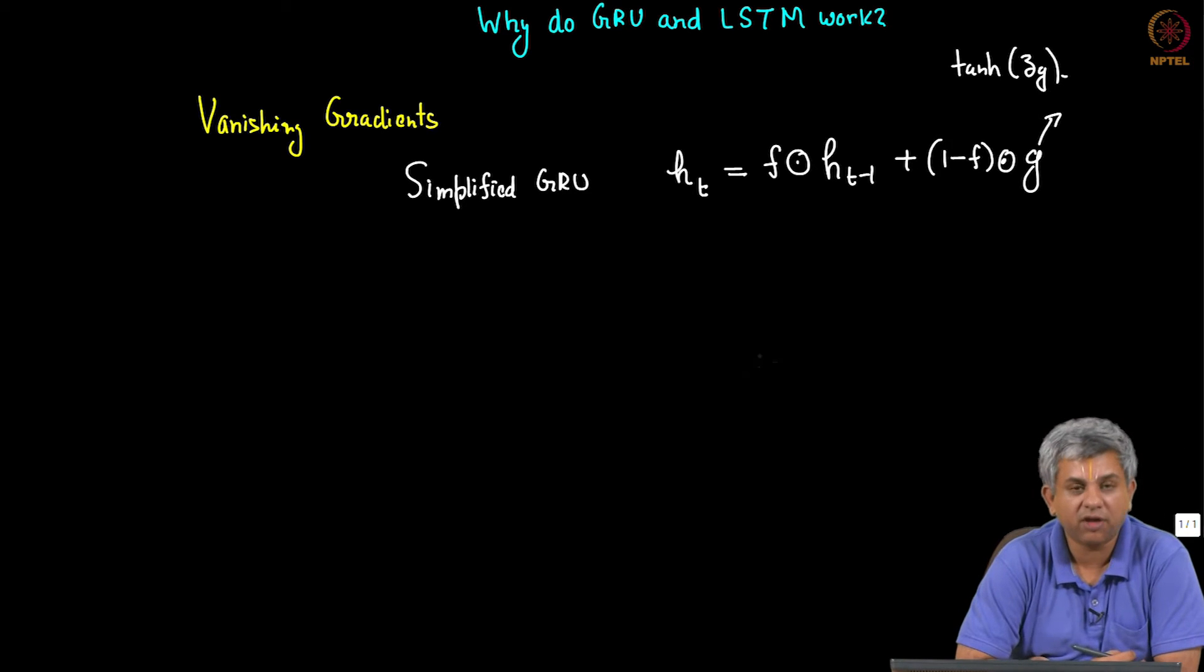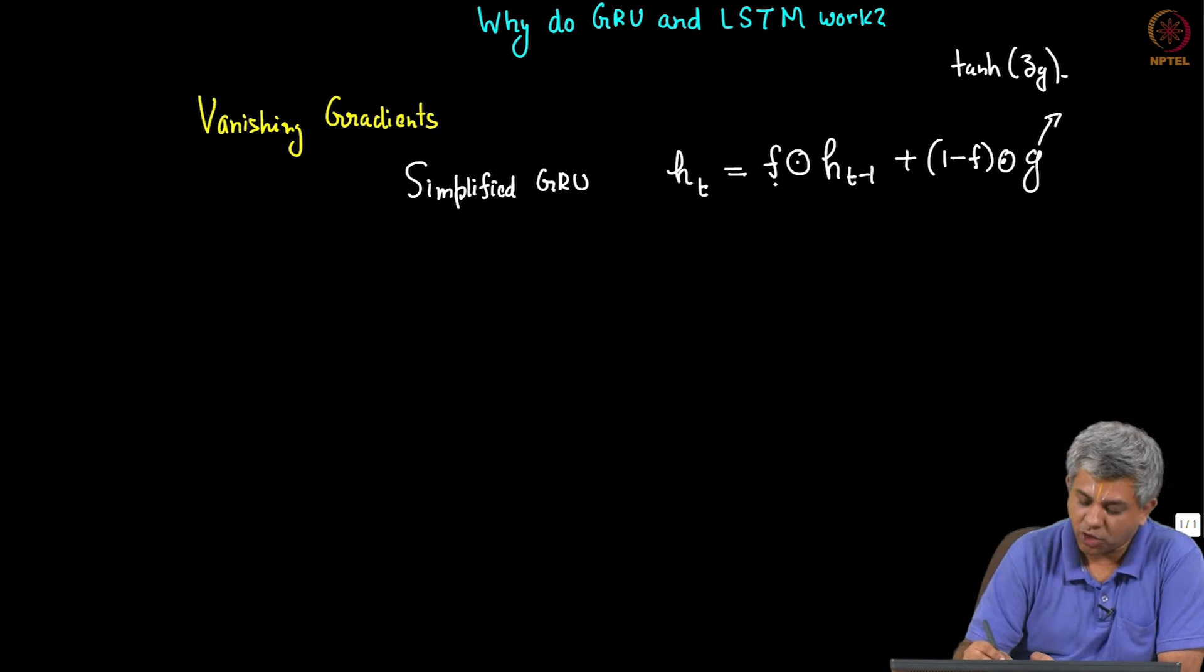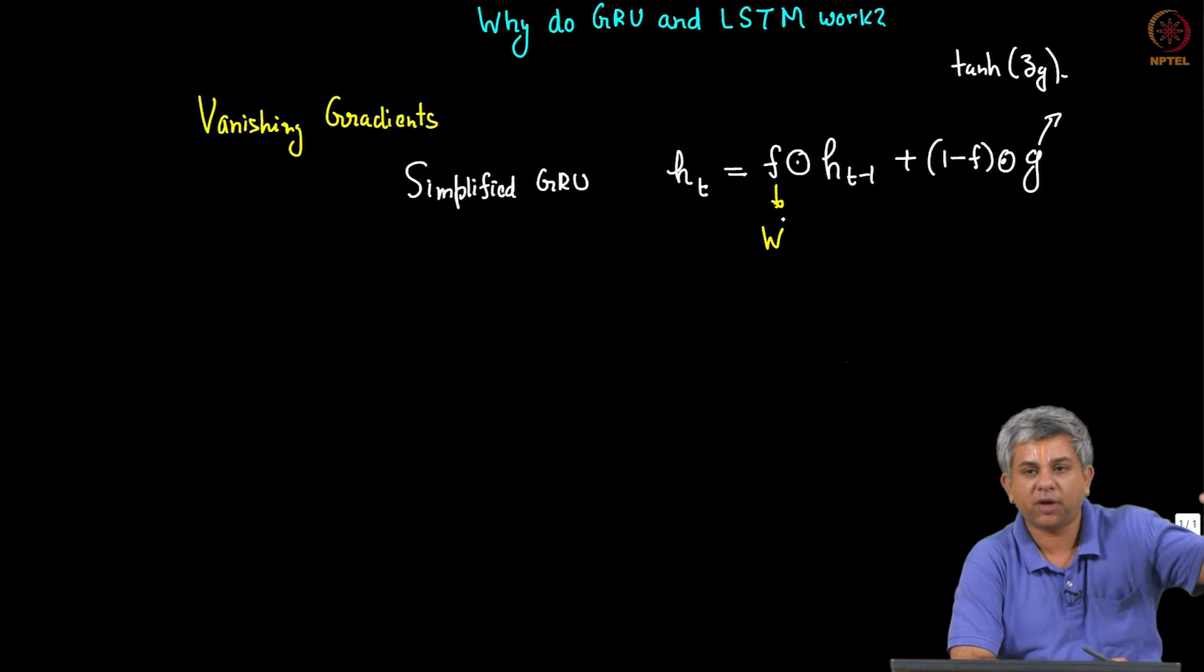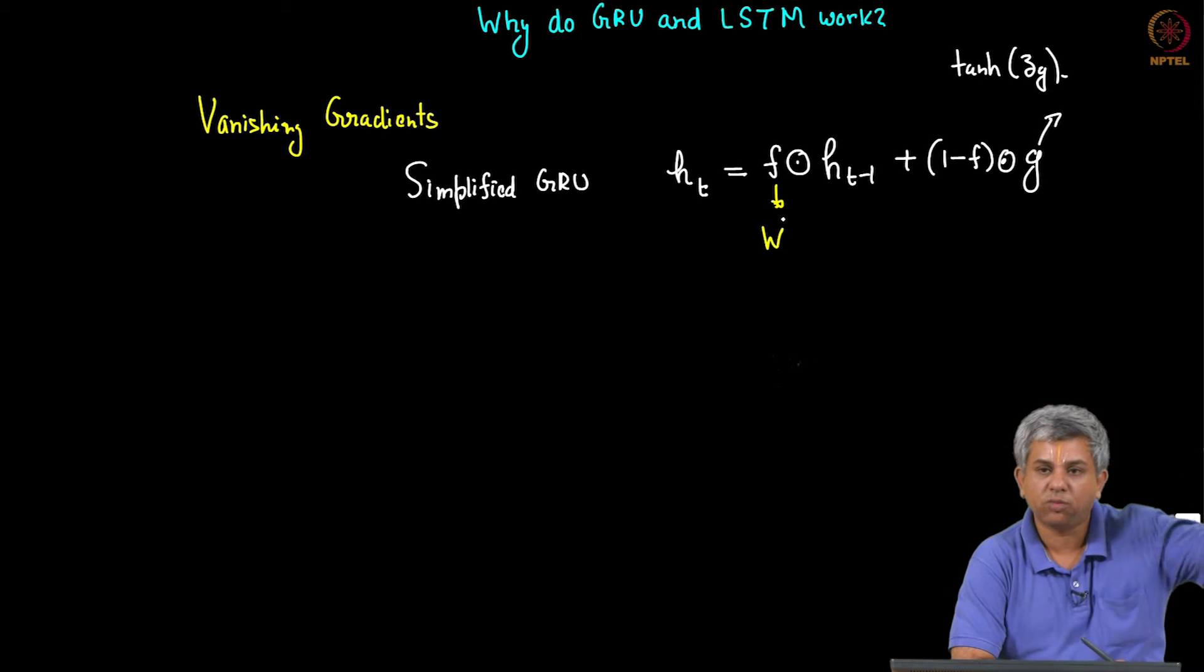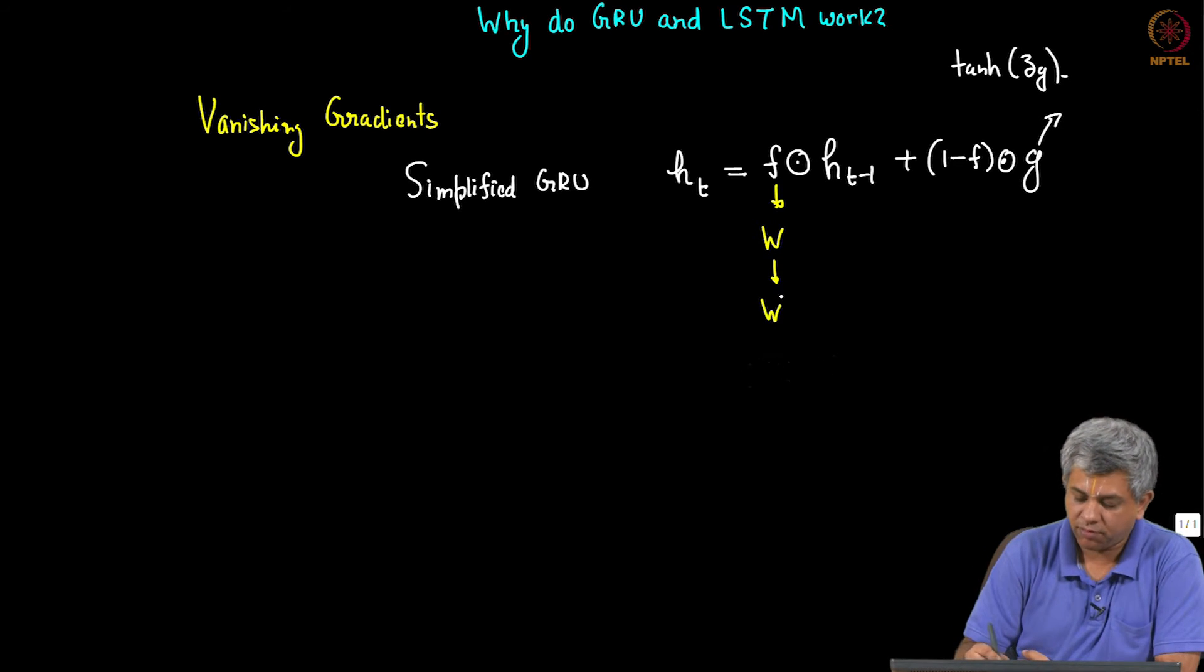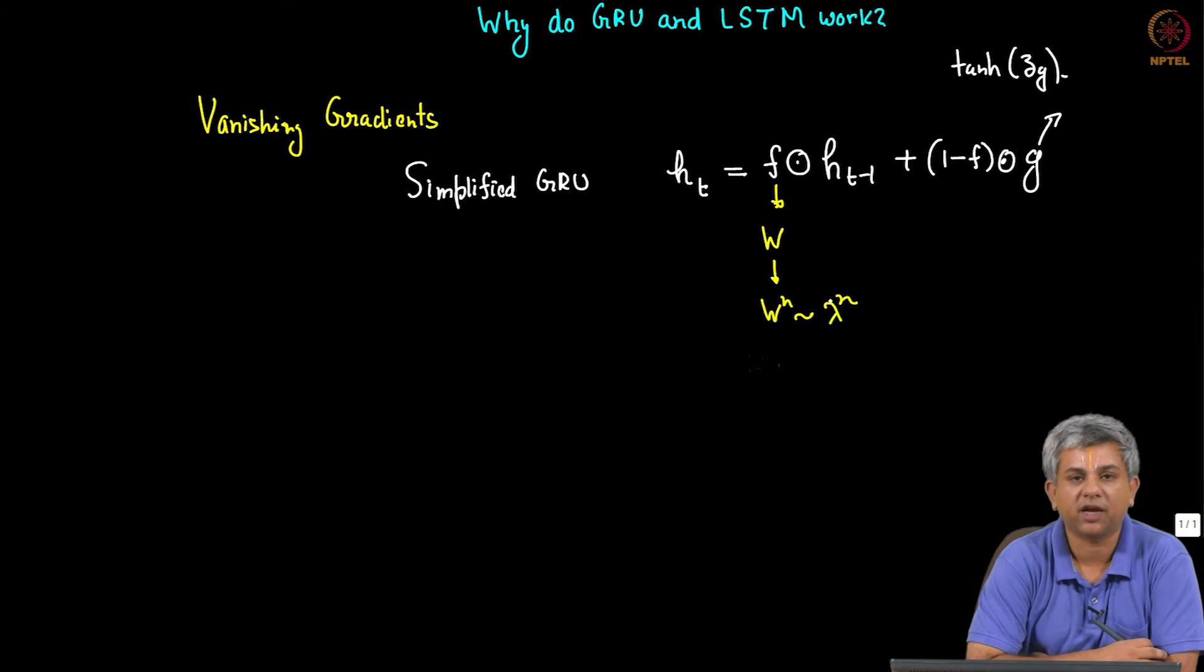Now how does this help the vanishing gradient issue? Remember why was it that the gradient was vanishing in the first place? You can think of this as if this is a weight matrix, and if this weight matrix multiplies with itself multiple times through multiple layers, your eigenvalue when it is raised to the power n, if it is less than 1, can actually go to 0. That was the basic problem. When this goes to W^n it went like lambda^n as I explained in the gradients video.